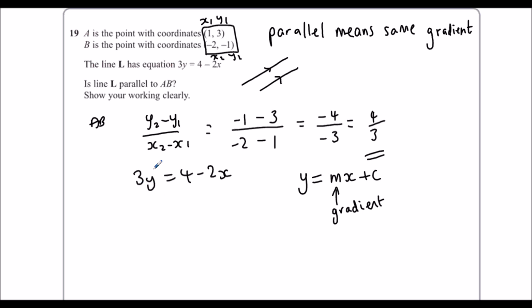So to get y by itself I'm going to divide everything by 3, so 4 over 3 minus 2 over 3 x. And switch around the x, so minus 2 over 3 x plus 4 over 3.